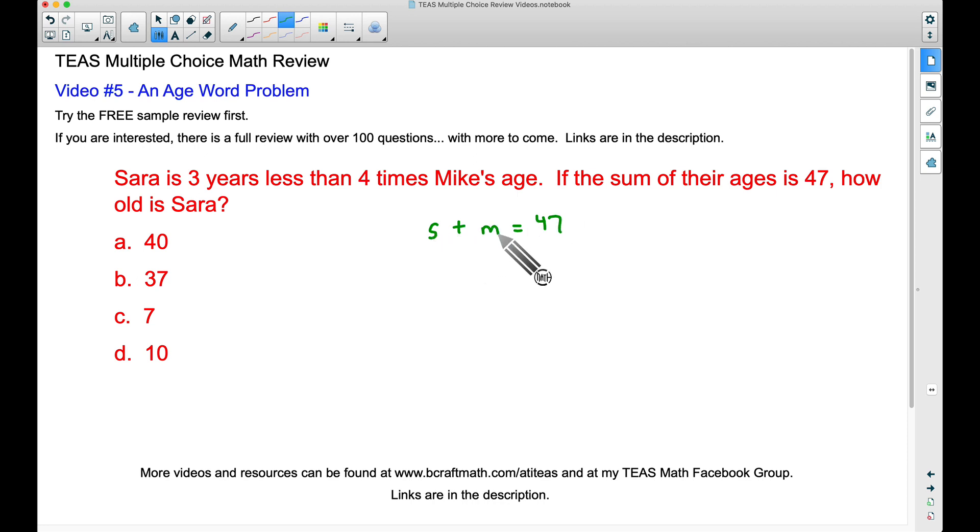Now we have an equation with two variables and a popular topic here is systems of equations. But before I dive into that, I want you to look at some of these answer choices. On a multiple choice test, you may often look at answers to eliminate choices. Check this out: we see 40 and 7, and 40 plus 7 is 47. But we also have 37 and 10, and 37 plus 10 gives us 47. Keep those ideas in mind and we'll come back to that in a moment.